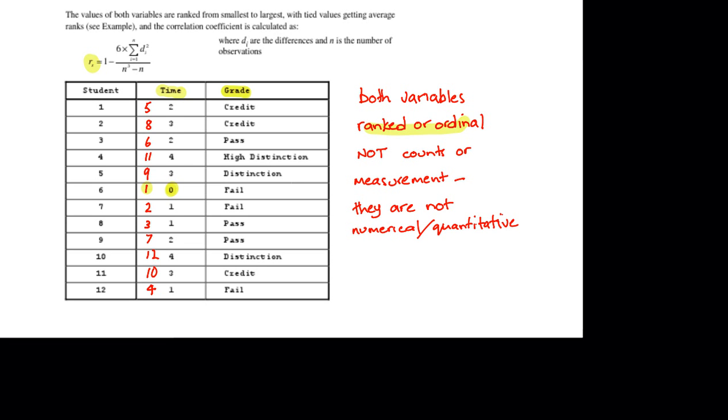Gone to the next shortest times, these 1s, and given those the next ranks, 2, 3 and 4. Then to the 2s, they get ranks 5, 6 and 7. The 3s get ranks 8, 9 and 10. And lastly, the 4s, the longest times, get ranks 11 and 12.